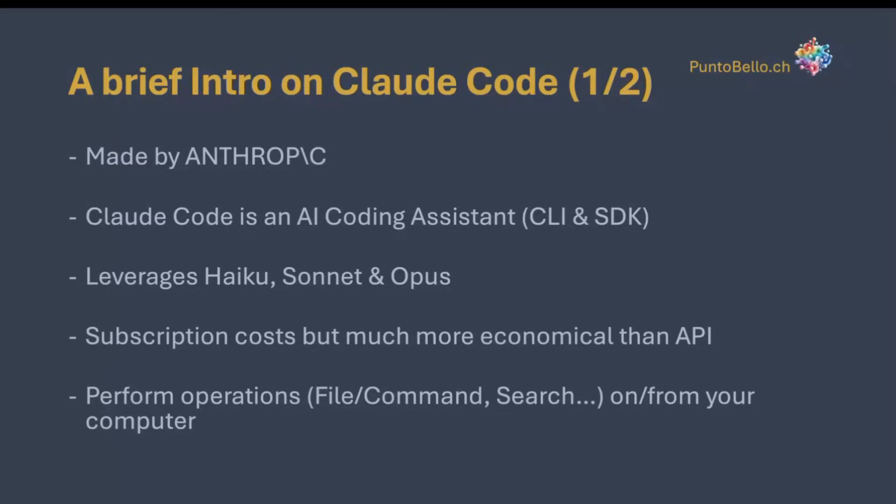It uses three different models: Haiku, which is a simple model just for text retrieval; Sonnet, which is a workhorse; and Opus for reasoning. Sonnet was updated two days ago by Anthropic and they said it can perform tasks for hours — quite impressive. The subscription is expensive, between $100 to $200 per month, but it's much more economical than the API. I'll also show how you can control your usage and how many tokens you use.